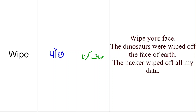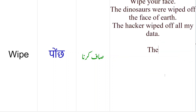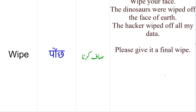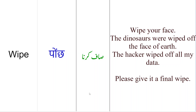Ab dekhte hain ki wipe ko hum as a noun kaise use kertay hain. Toh kisi cheez ko saaf kerne ke liye bhi hum wipe ka word use kertay hain. Agar mein yeh kehta ho ki kameray ko achi tarah se saaf ker do, toh yahan peh mein isse as a noun use karunga: 'Please give it a final wipe.' Toh yahan peh bhi hum ne word wipe ko noun ke toor peh safai ke liye use kia hai.